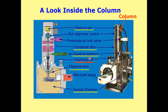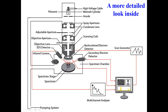We have the scanning coils here — the function, again, will be discussed in a separate lecture. And here we have the objective lens, the motorized stage, and sample chamber. In more detail you can see the internal view of the scanning electron microscope.